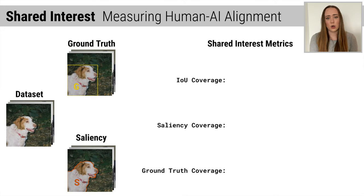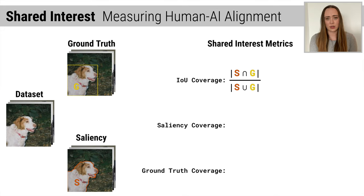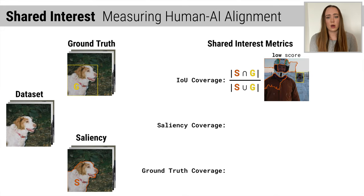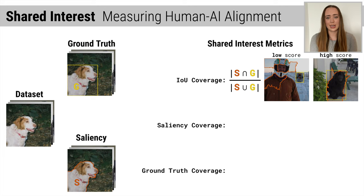For each image, we quantify the relationship between the saliency and the ground truth via three coverage metrics: IOU coverage, saliency coverage, and ground truth coverage. IOU coverage measures the alignment between the saliency and the ground truth. Low IOU coverage indicates that those regions are disjoint, like our snowmobile image from before. High IOU coverage indicates the saliency and ground truth are almost identical.